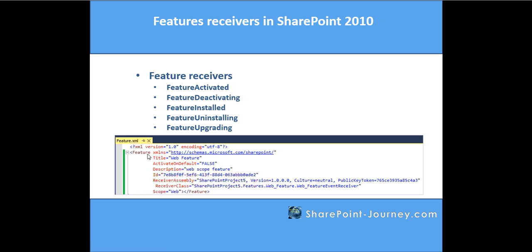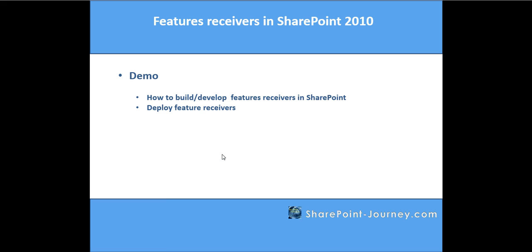If you look at this screenshot, we have seen how feature.xml looks and what it talks about. It specifies the title of the feature, the description, the ID, and the scope of that particular feature. Now if you add a feature receiver, you will have a receiver assembly and a receiver class attached to that, so you have code placed for that particular feature.